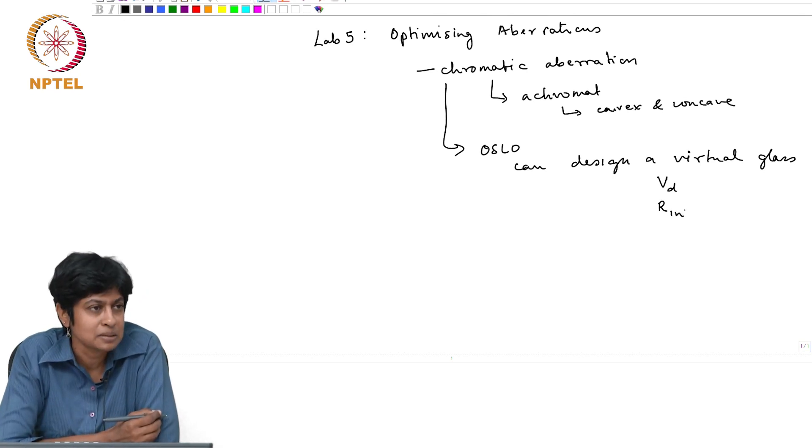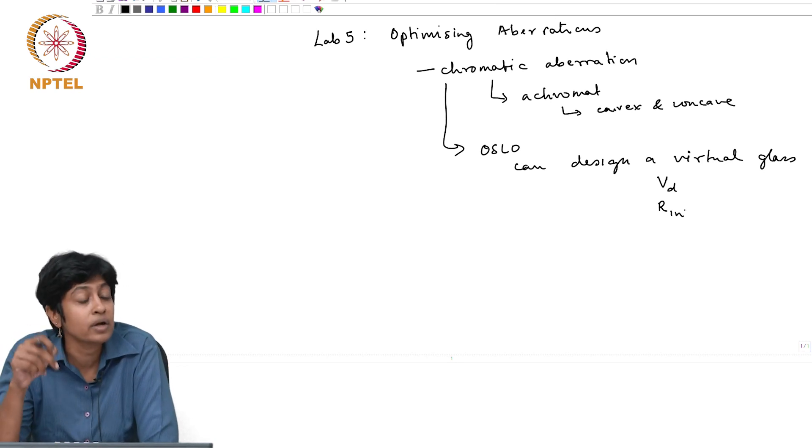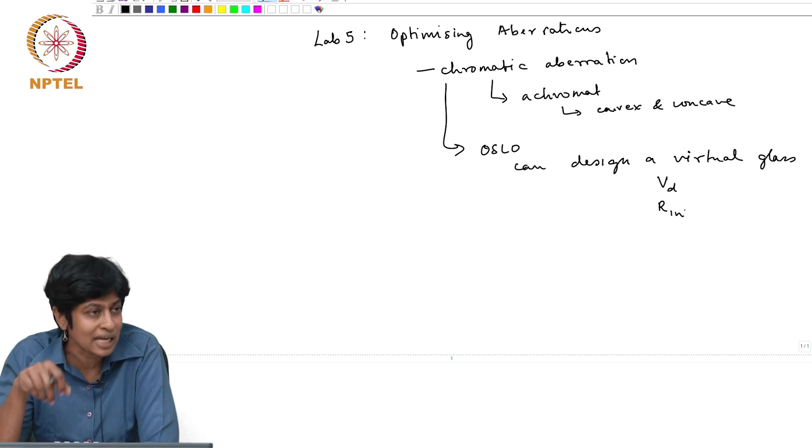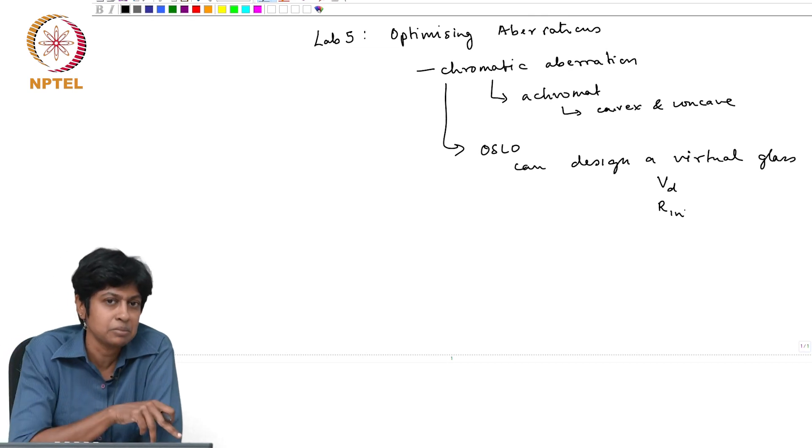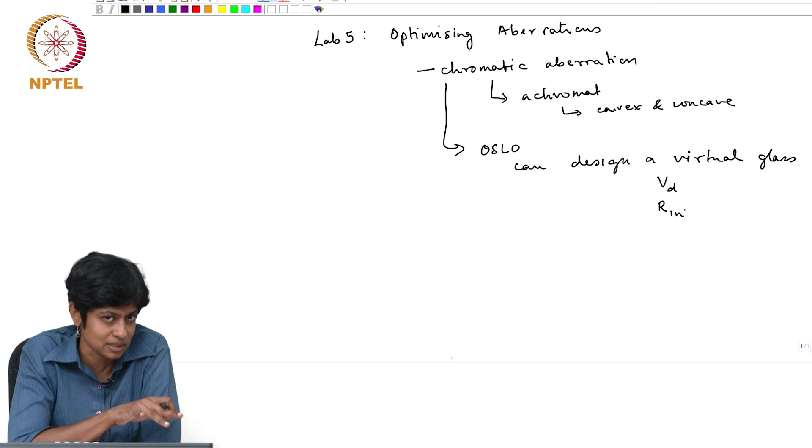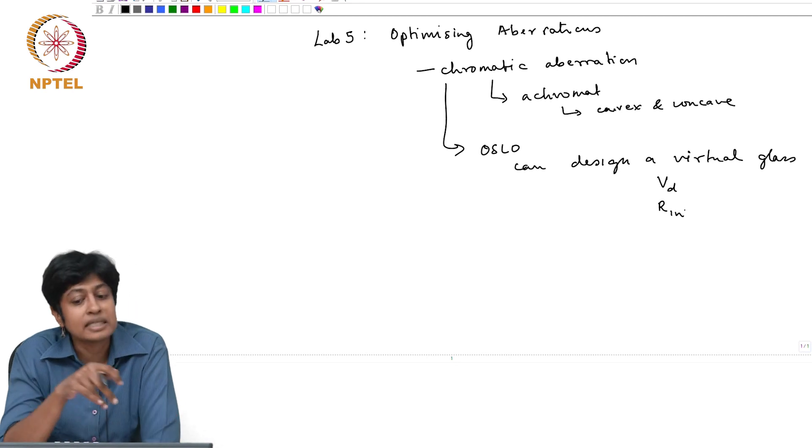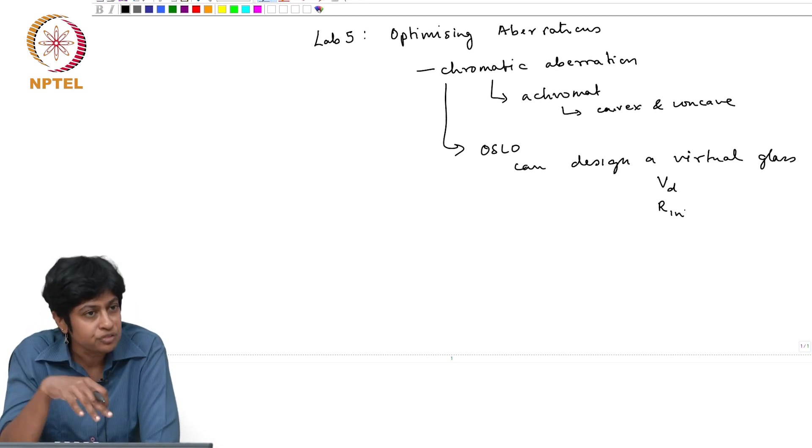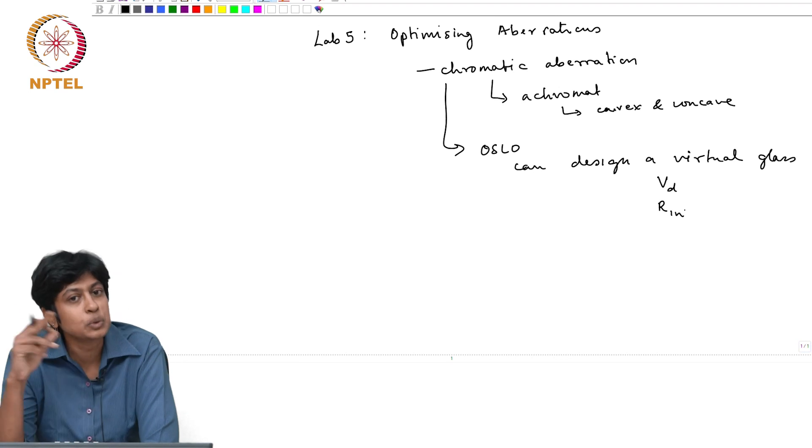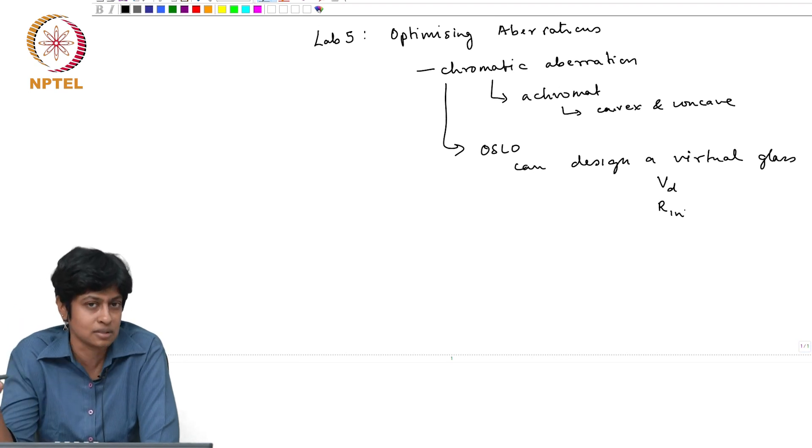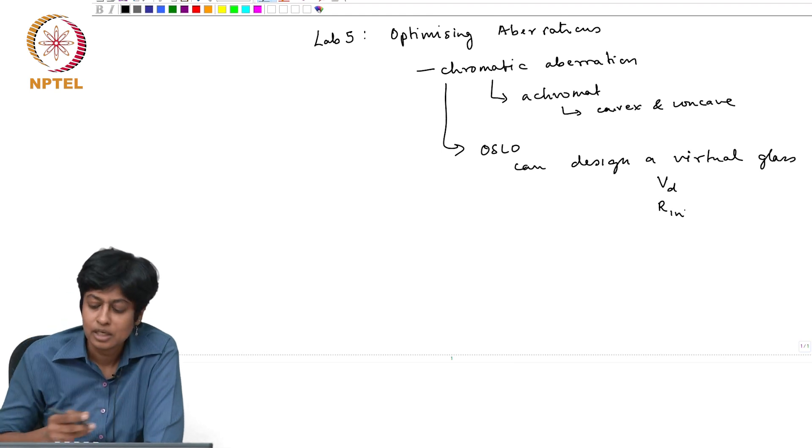A virtual glass means I am not going to a catalogue and picking out a glass type that readily exists. It will allow me to design and say if I had a glass with these characteristics, with these parameters, then I would have minimum chromatic aberration for this system. It is useful because once you have designed your virtual glass, there is a command which will then allow you to go and pick the actual glass which is closest to this virtual glass.